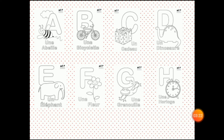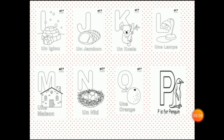H — Horloge. I — Igloo. J — Jambon. K — Koala. L — Lampe. M — Maison. N — Nid.